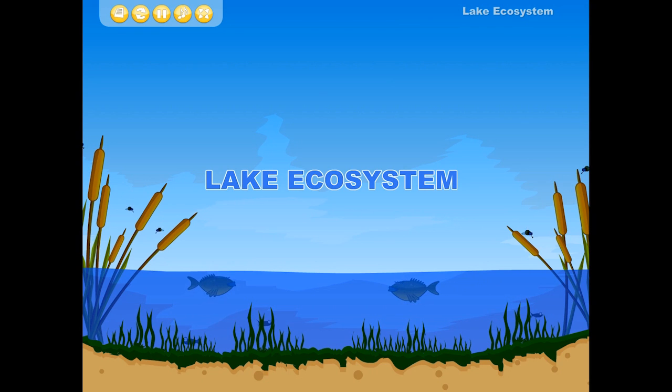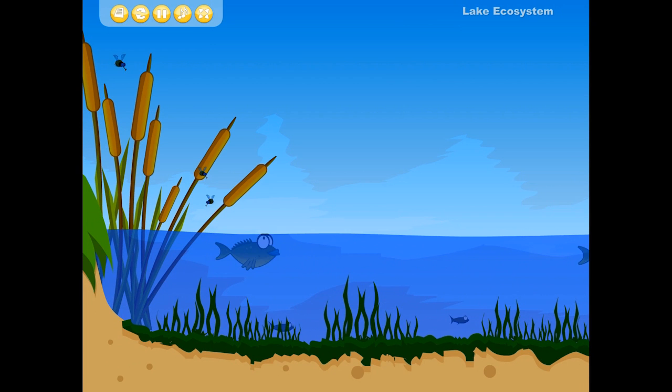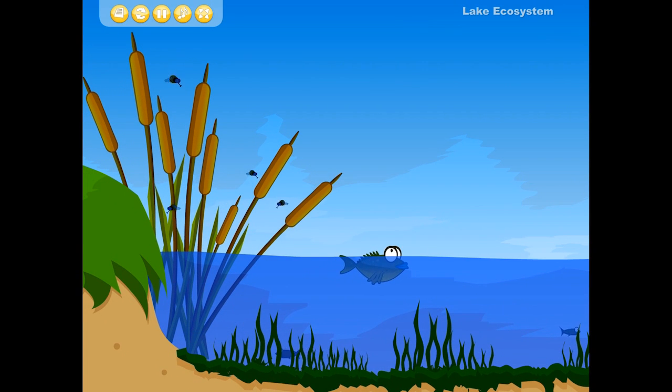Let's see how the members of an aquatic ecosystem are connected. Algae that grow in the lake provide a shelter for small fish. Bigger fish feed on smaller fish. A reed makes shelter for insects.